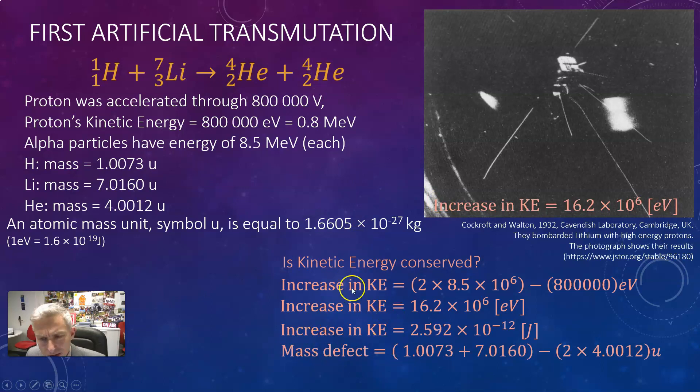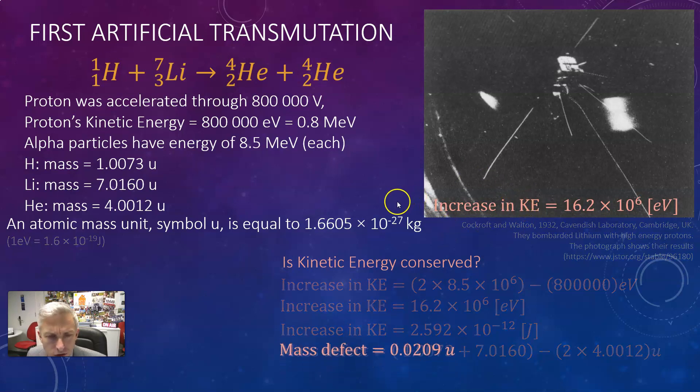Now if we look at the mass defect you'll find that I actually lose. I've got a little bit more mass here than I had here and so I've got a mass defect of 0.02909 u atomic mass units.